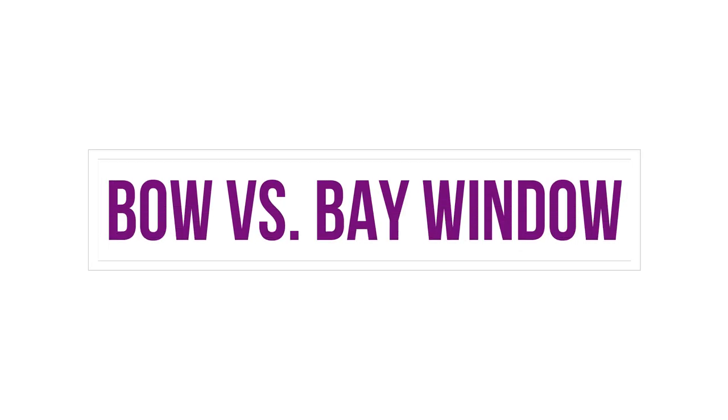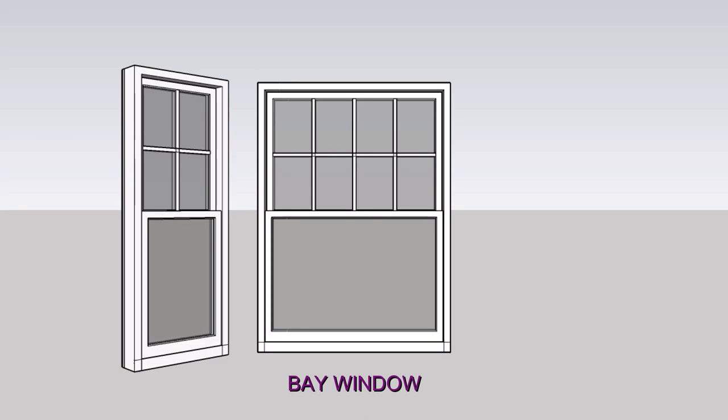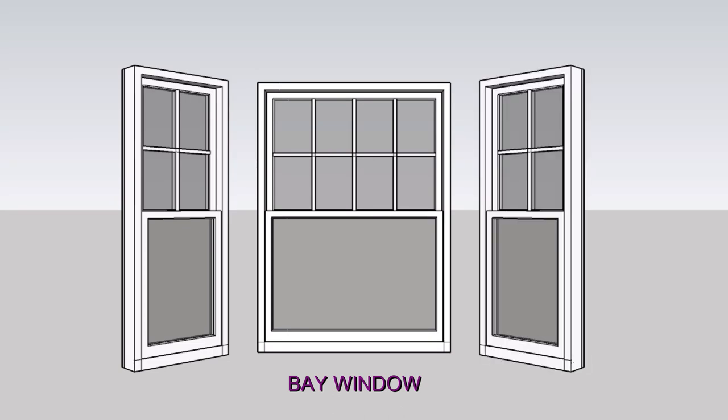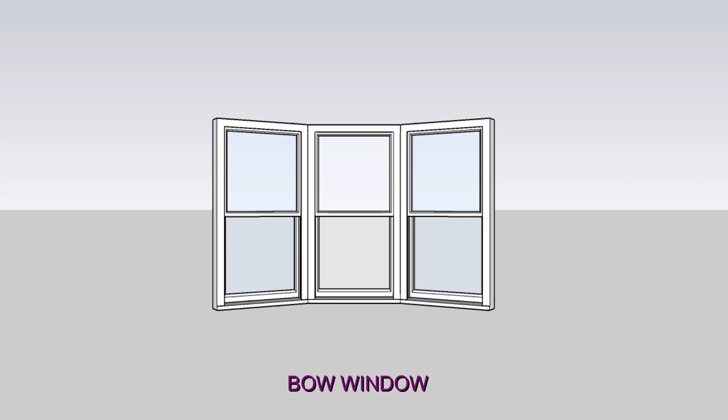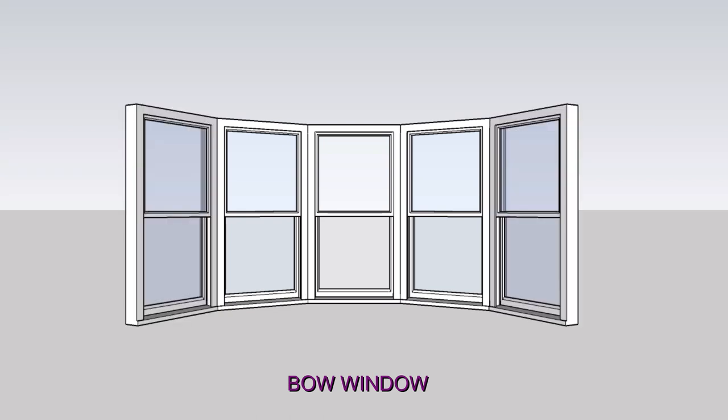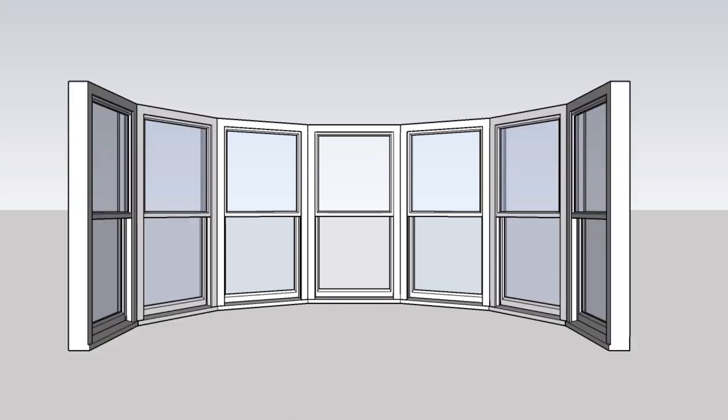Before we jump in, let's first look at a few basics. While a bay window is usually made up of a series of windows with distinct angles, a bow window is made up of several equally-sized window panels installed in a gentle, faceted curve.